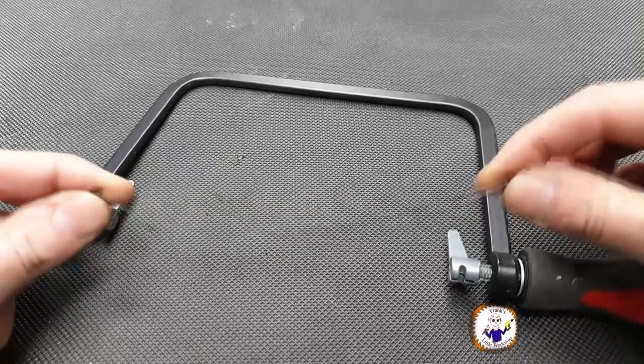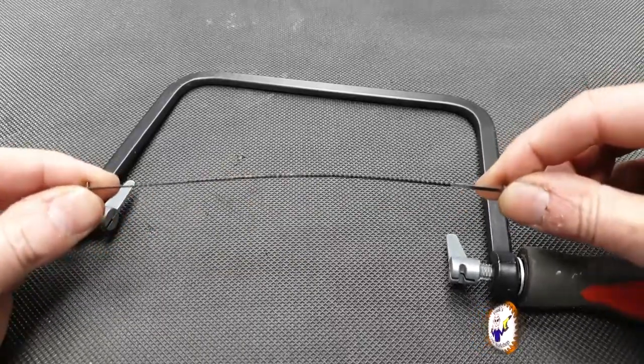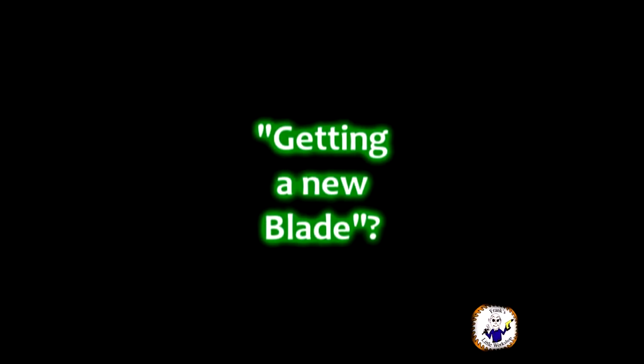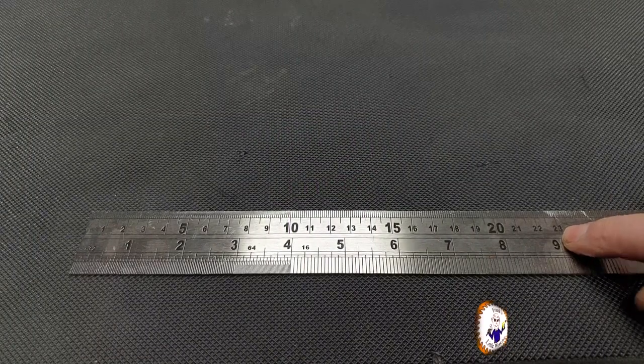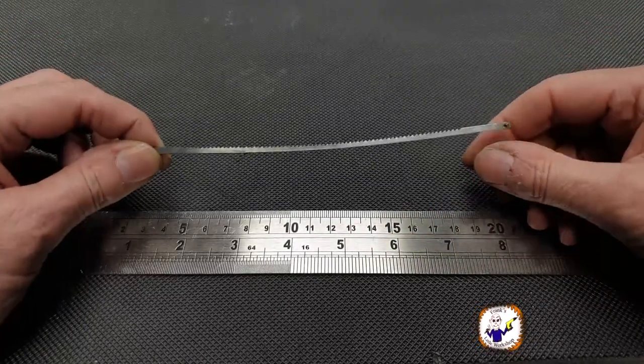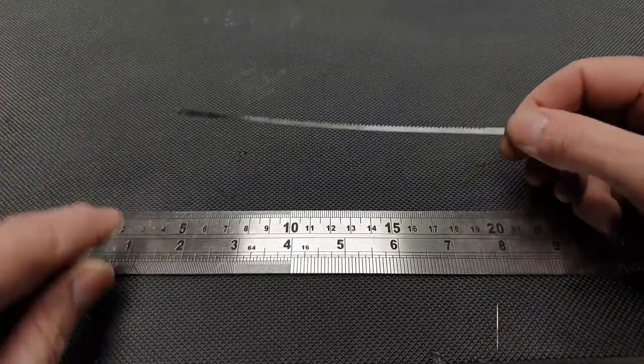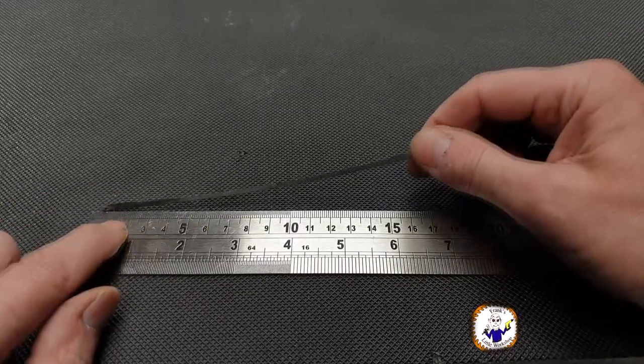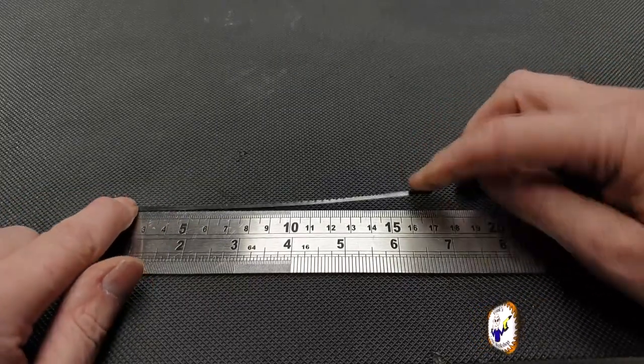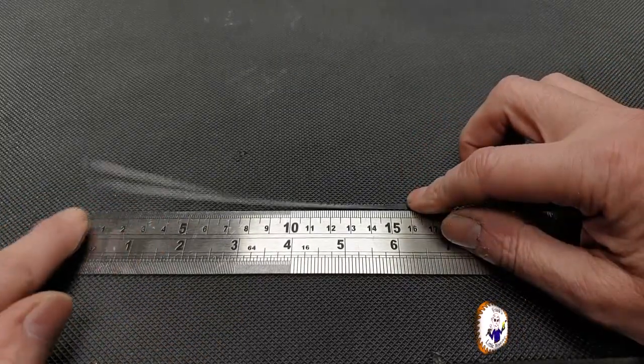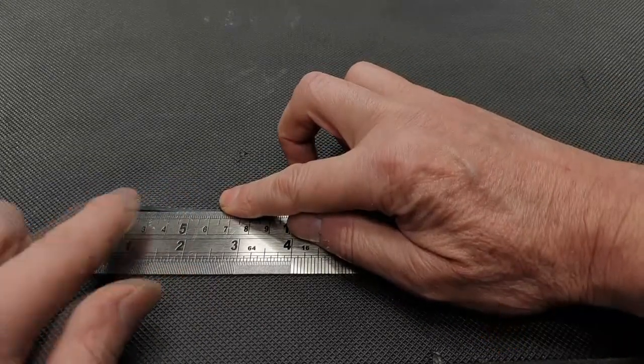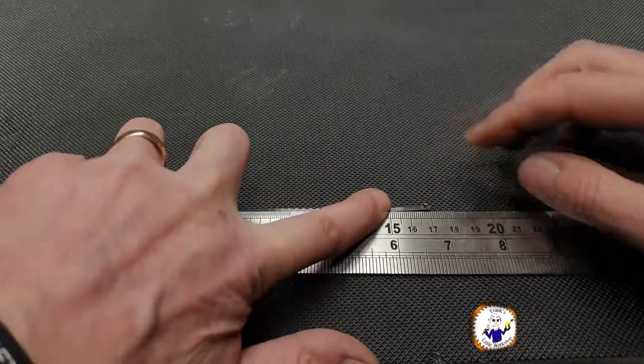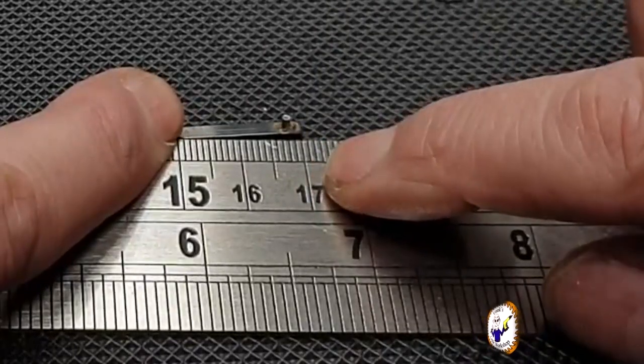Right, so we've got to order a new blade. Which one do we order? To order a new blade, what we need to know is the actual length of the blade. The easiest way to do it is measure it. Going from the end of the blade to the other end, this actually measures 170 millimeters.